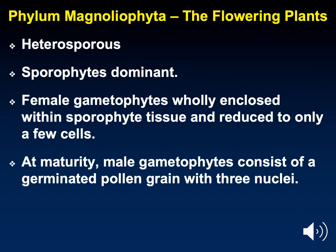All angiosperms in this phylum are heterosporous, which simply means that they have both male and female parts. When talking about the alternation of generations seen in plant evolution, angiosperms are sporophyte dominant. The gametophyte stage is greatly reduced to a couple of cells that occur inside the pollen or ovule.